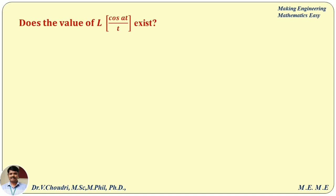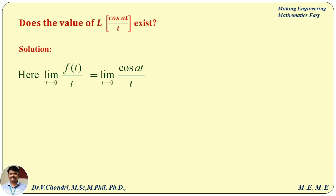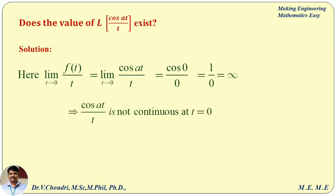Now we check whether the Laplace transformation of cos(at)/t exists. We know that the limit of f(t)/t must exist as t tends to 0. Applying this: limit of cos(at)/t as t tends to 0 gives cos(0)/0 = 1/0 = infinity. Therefore cos(at)/t is not continuous at t = 0, and thus the Laplace transformation of cos(at)/t does not exist.